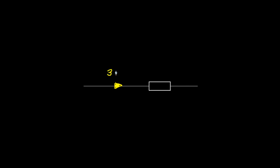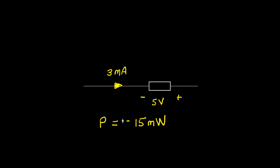In a second situation, we denote the direction of current from left to right and assign it a value of 3 milliamps. The voltage increases from left to right by a value of 5 volts. Since the current enters on the negative side of our reference, the power equals negative 3 times 5, giving negative 15 milliwatts. Because the value is negative, we say this is a source of electrical power.